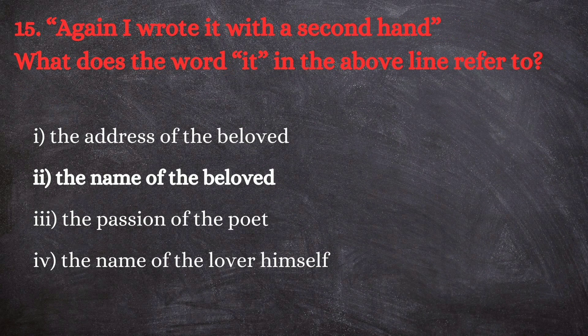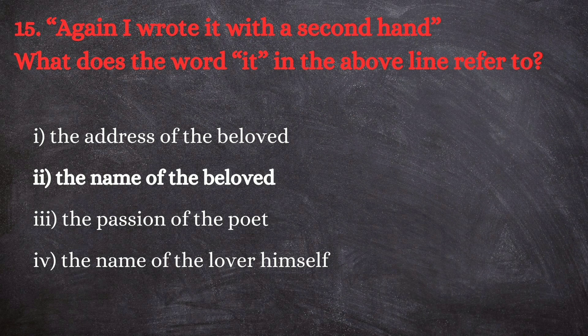Last question: 'Again I wrote it with a second hand' — what does the word 'it' in the above line refer to? The options are: the address of the beloved; second, the name of the beloved; third, the passion of the poet; and fourth, the name of the lover himself. The correct answer is the second one — the name of the beloved. The lover first wrote the name of the beloved on the seashore, the waves came and washed it away, then he wrote it a second time, so 'it' refers to the name of the beloved.